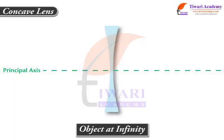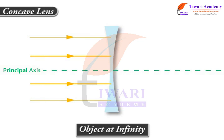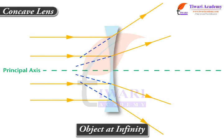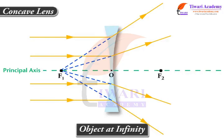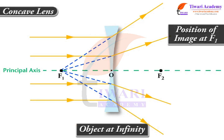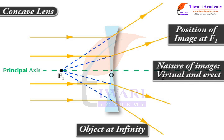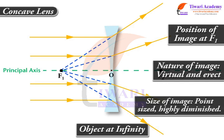Case A: Object is at infinity. A highly diminished, point-sized, virtual and erect image is formed at principal focus F1. Position of image: at F1. Nature of image: virtual and erect. Size of image: point-sized, highly diminished.